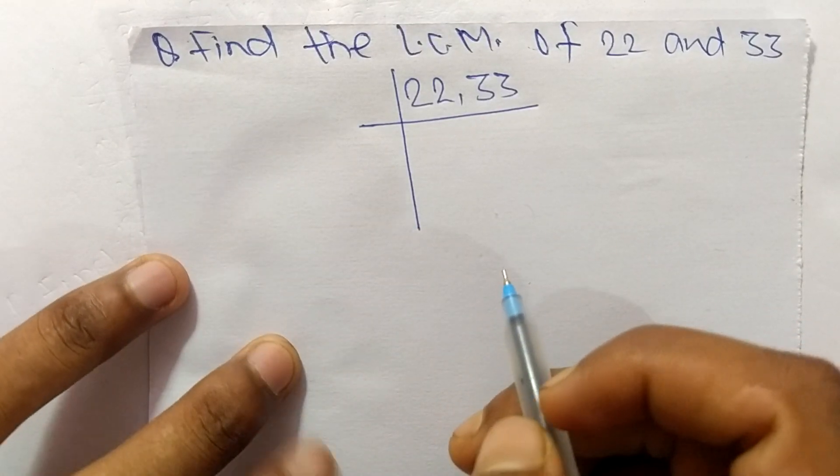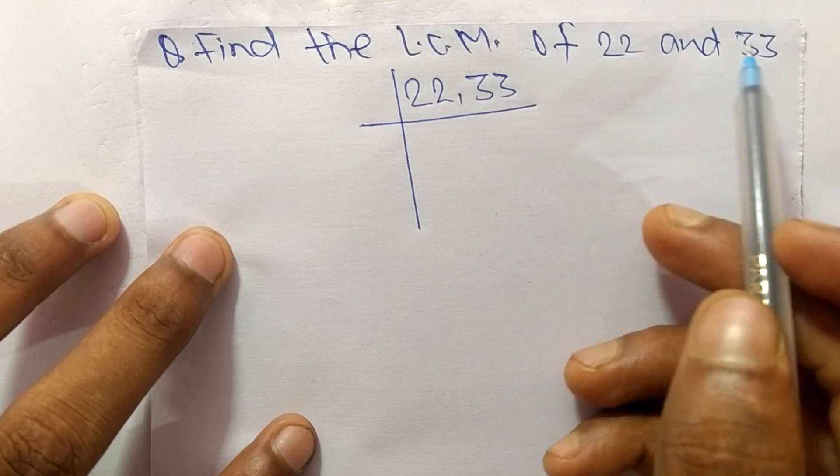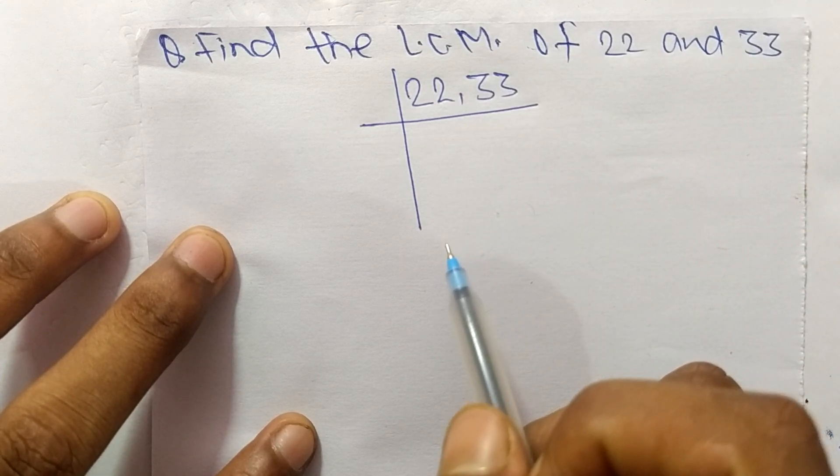So today in this video we shall learn to find the LCM of 22 and 33. To find LCM, first of all we choose the lowest number that can exactly divide 22 and 33.